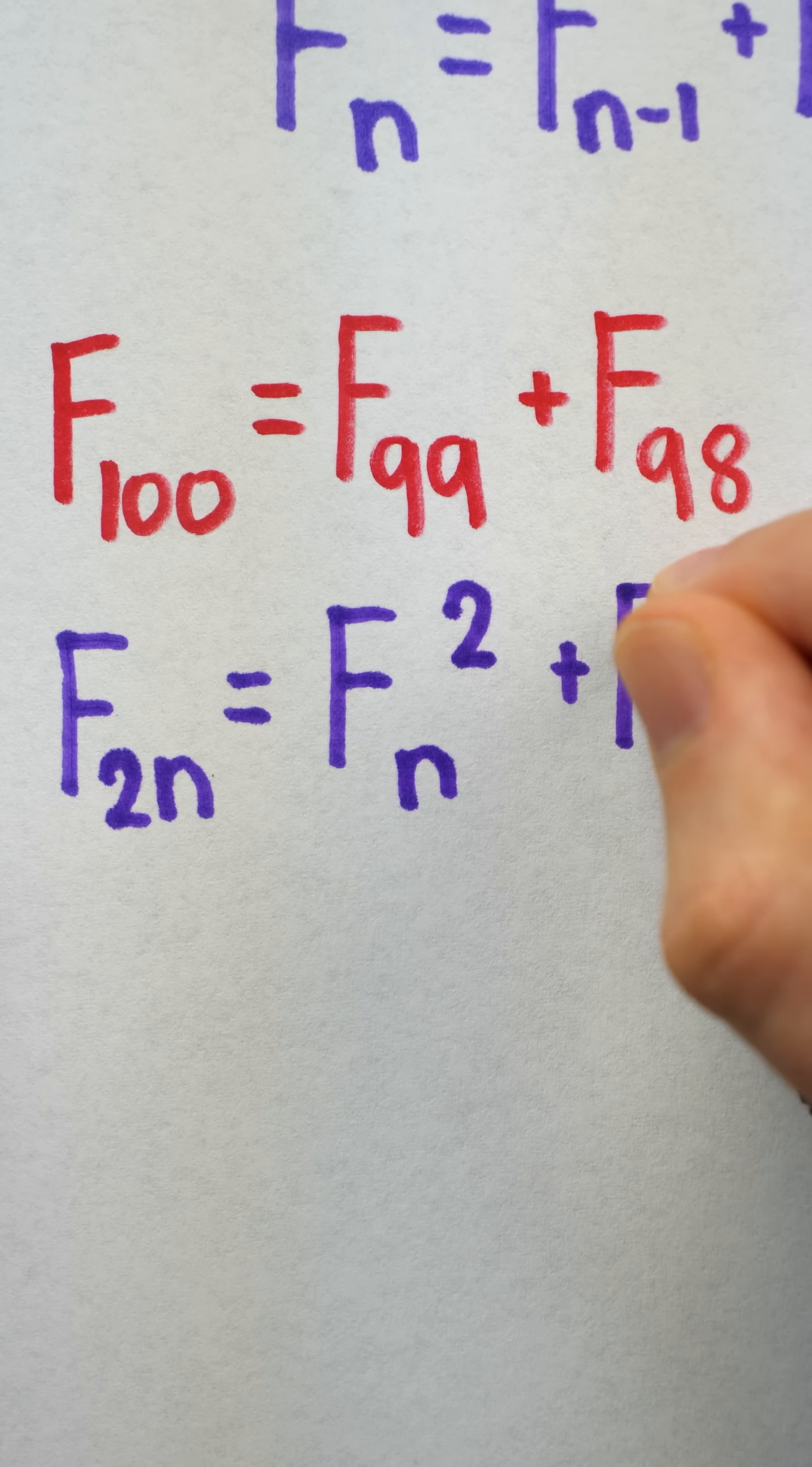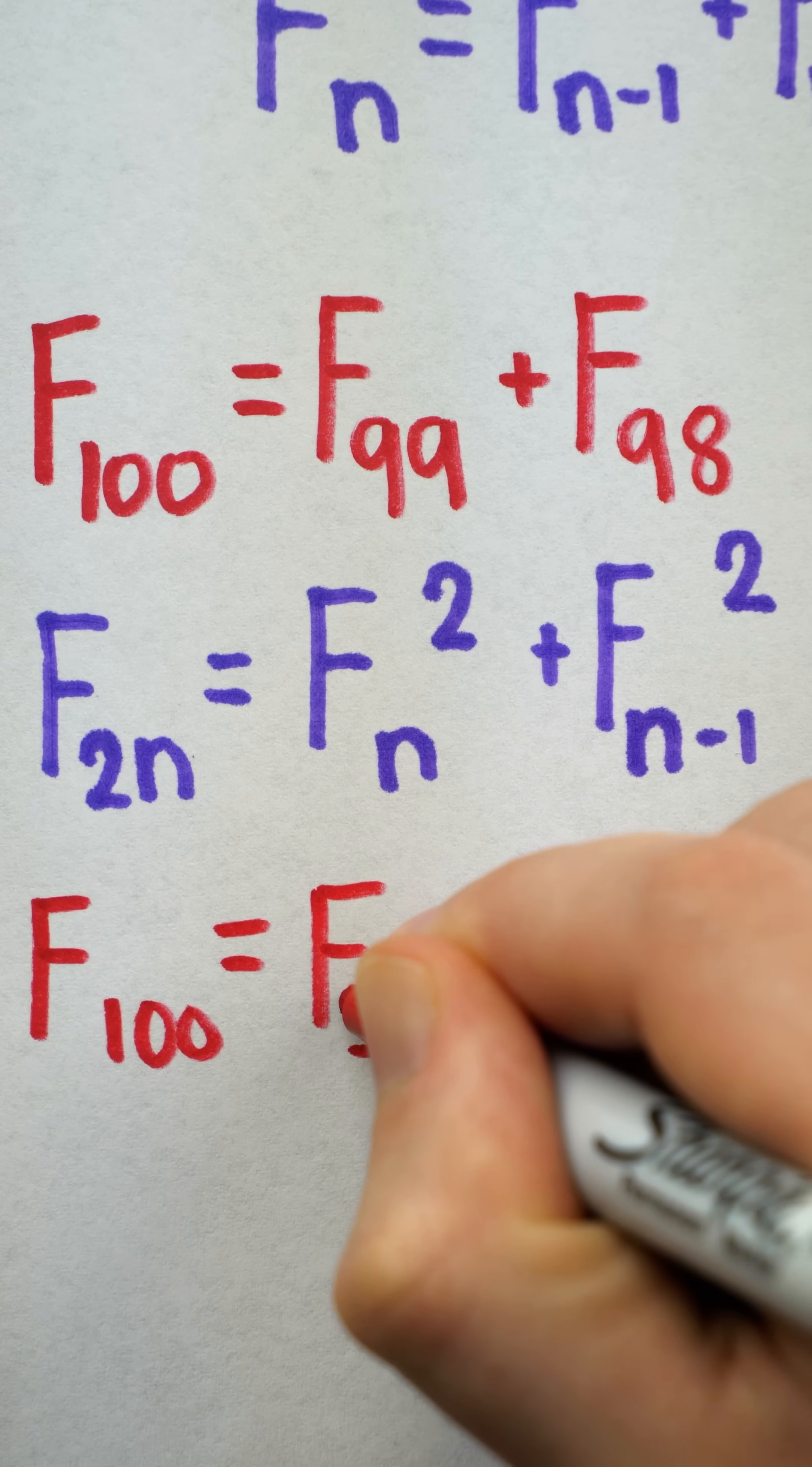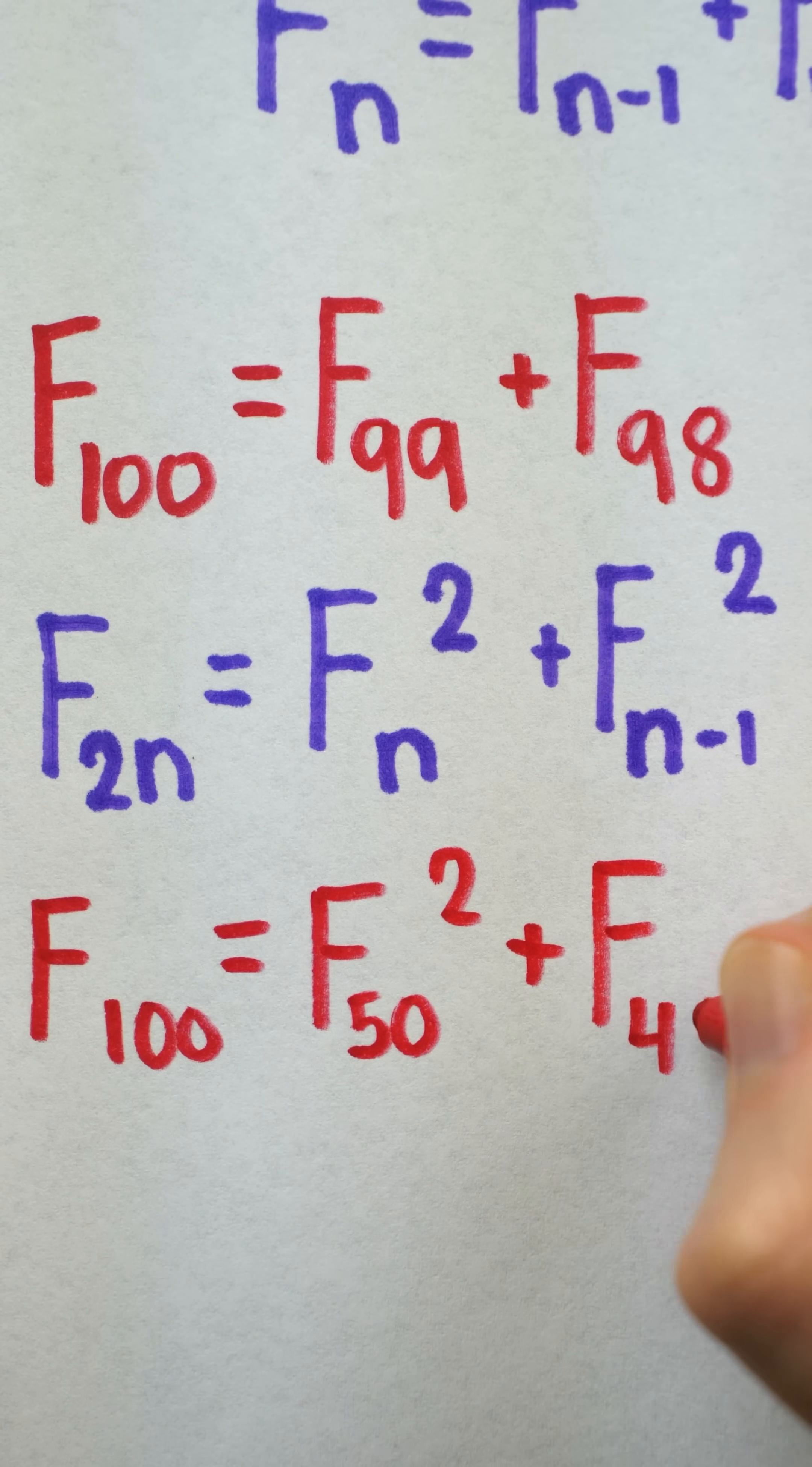So in fact, to find F100, all we have to do is add the squares of F50 and F49. And that's a handy trick.